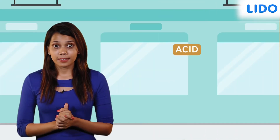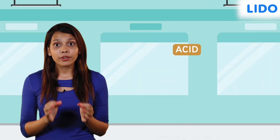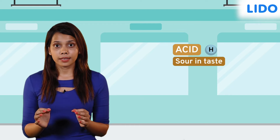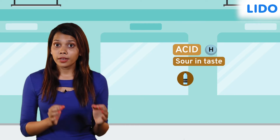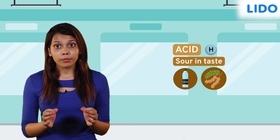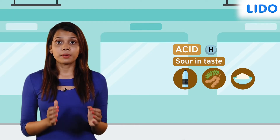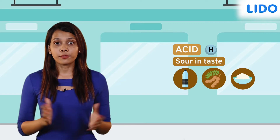Acids are substances that have a hydrogen atom and are sour in taste. Vinegar, tamarind, and curd are some examples of acidic foods.